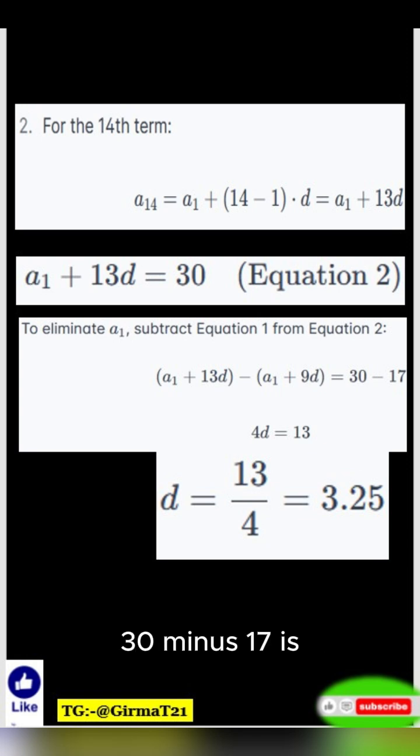On the right side, 30 - 17 is 13, so we're left with a super simple equation: 4d = 13. To find d, we just need to divide both sides by 4.